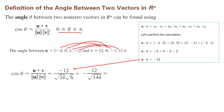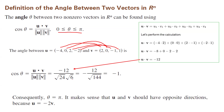From algebra, you can write it as negative 12 divided by the square root of 144, which is negative 12 divided by 12, or negative 1. So cosine theta equals negative 1, and theta is pi. The meaning of that is u and v have opposite directions — the relation between u and v is u equals negative 2 times v.